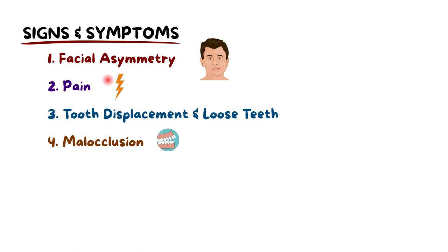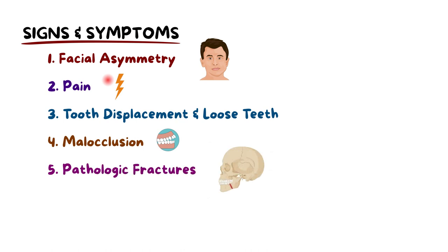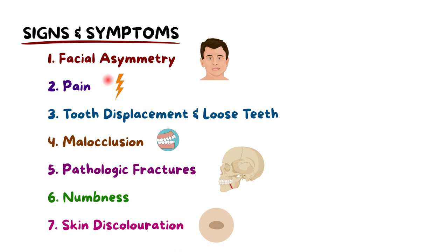In some instances, the weakened bone structure is prone to fractures. Additionally, a tingling or numbness may arise if the lesion encroaches on nerve pathways. Beyond the bone, the skin may show light brown patches.